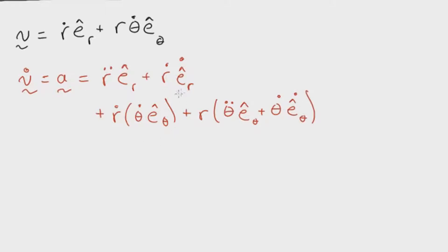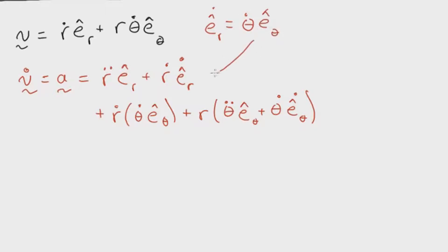I'm going to rewrite this and plug in the value for e_r_dot. In the previous video, we said that e_r_dot is equal to theta_dot times e_theta. I'll plug this in and simplify, grouping terms together so we have a nicer equation for the acceleration vector.